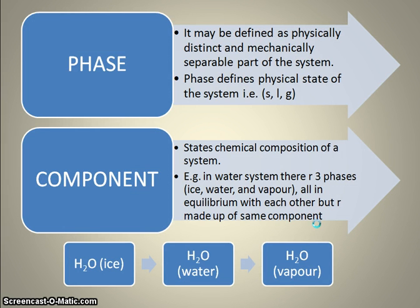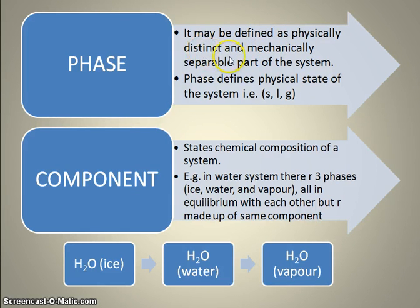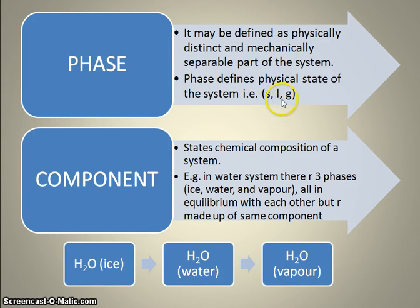First of all, we should come to know what is phase. Phase may be defined as a physically distinct and mechanically separable part of the system. Phase actually represents the physical state of the system — whether the system is present in its solid form, liquid form, or gas form.